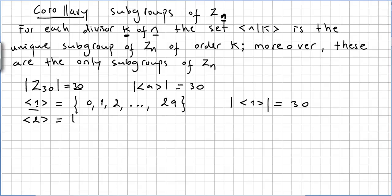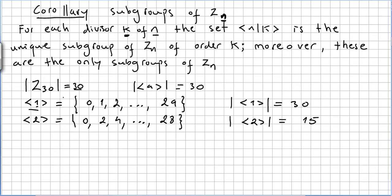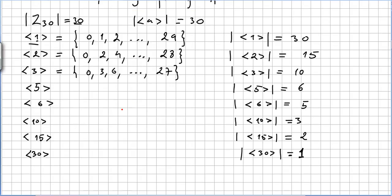What about the subgroup generated by 2? That will be 0, 2, 4, and so on up to 28. The order of this subgroup will be 30 divided by 2, which is 15. So we are going to get here the list of subgroups of Z_30. Subgroup generated by 1: order 30. Subgroup generated by 2: order 15 — 30 divided by 2 gives 15.